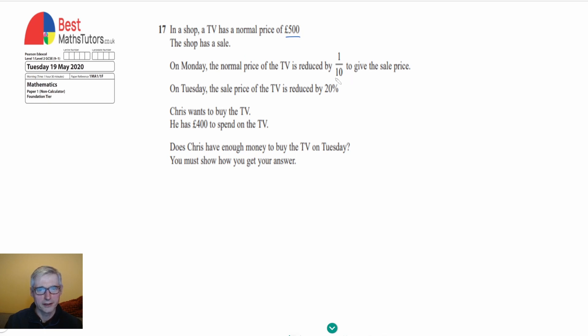On Monday the price is reduced by one-tenth and then on Tuesday the sale price is further reduced by another 20%. Chris wants to buy the TV and he's got £400 to spend and we've got to decide whether or not he's got enough money to buy the TV on the Tuesday.